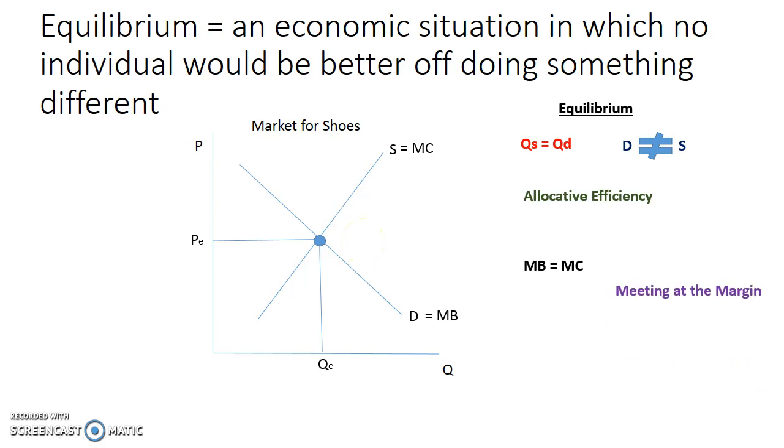Another way of talking about that marginal benefit and marginal cost intersection is saying they're meeting at the margin. This is where the two marginal curves, benefit and cost, intersect one another.